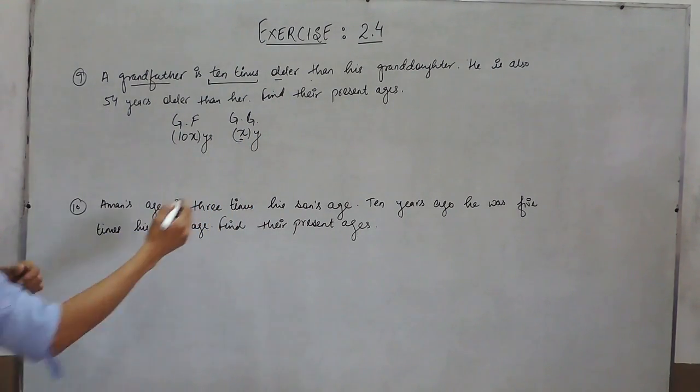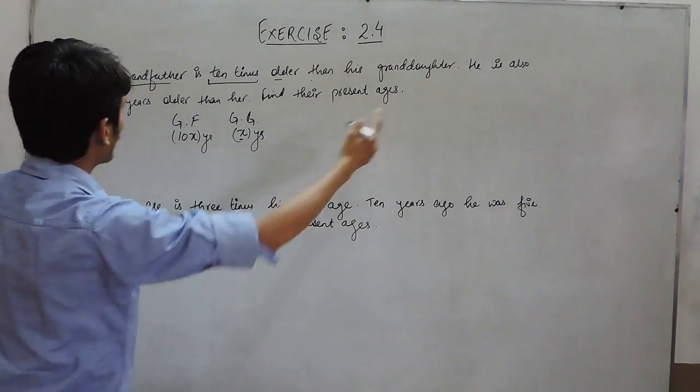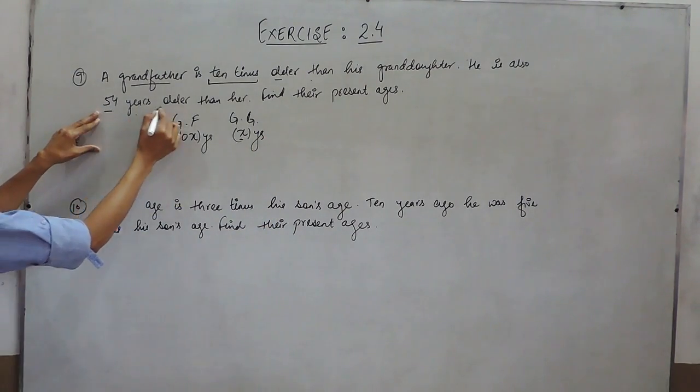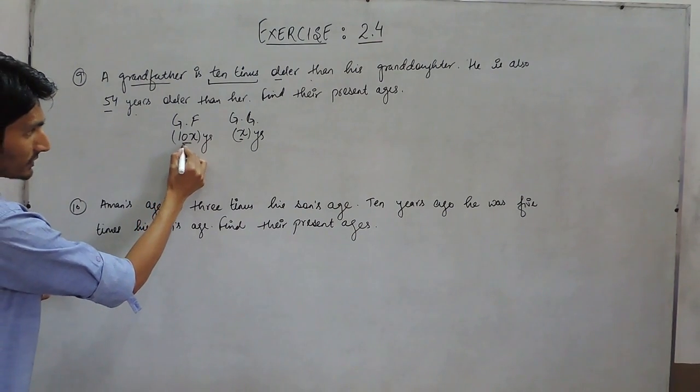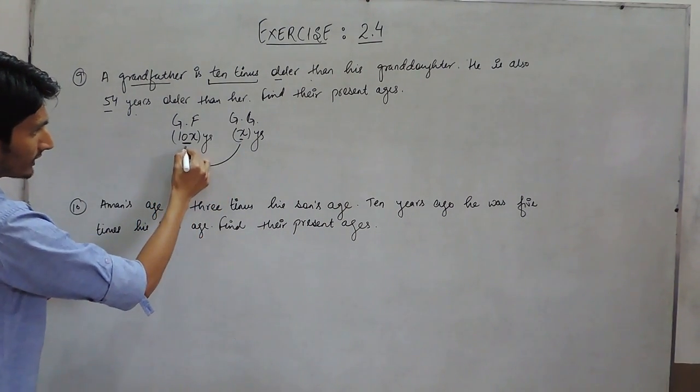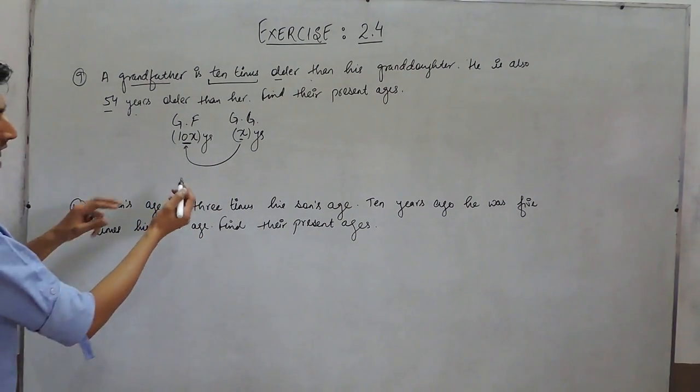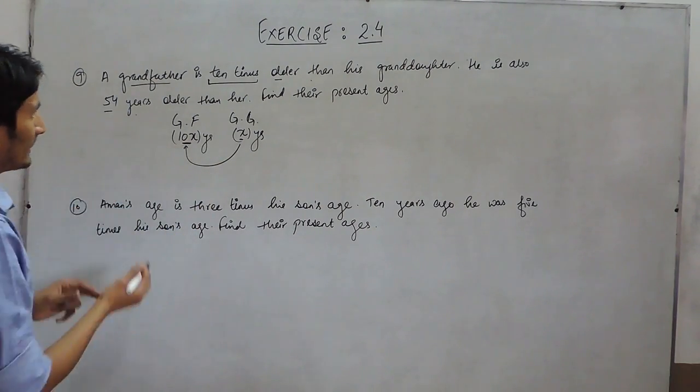In the second case, it is given that he is also 54 years older than her. Means this person should be 54 years more than this or you can say the difference between their age must be 54 years.